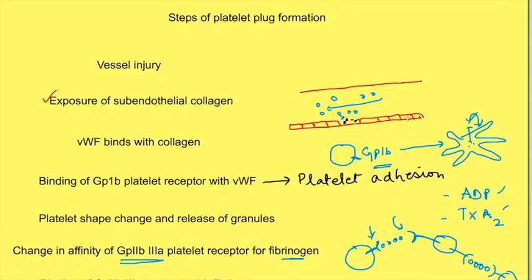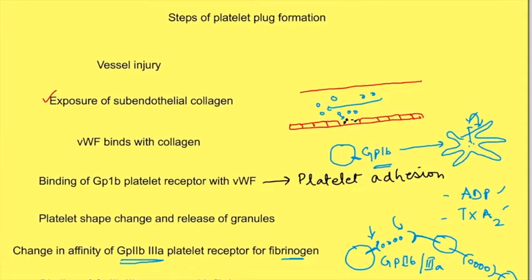Von Willebrand factor and GP1B mediate the binding between platelets and the subendothelium, while GP2B3A receptor mediates the binding between platelets and other platelets. This process of platelets binding with other platelets is known as platelet aggregation.